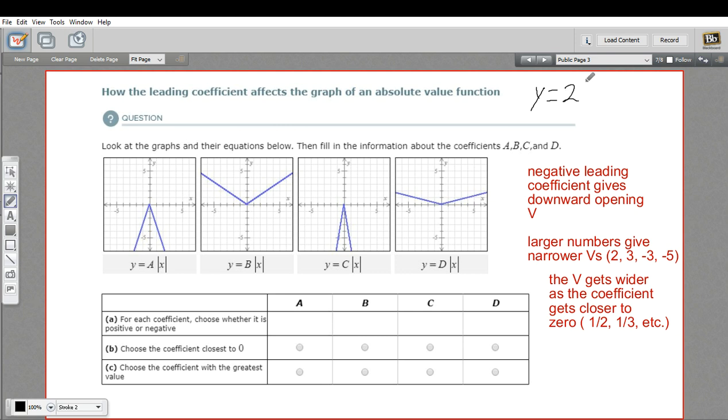So instead of y equals the absolute value of x, you'd have y equals 2 times the absolute value of x, or y equals negative 5 times the absolute value of x, or y equals 1/2 times the absolute value of x. So what do these different leading coefficients do to the shapes of the graph?